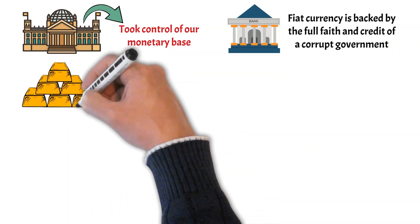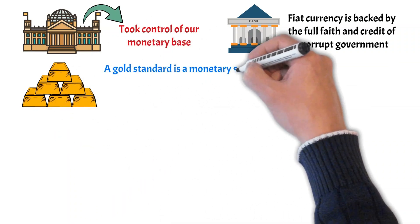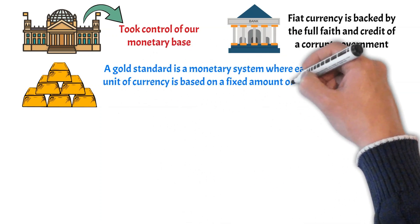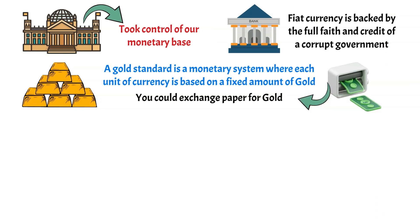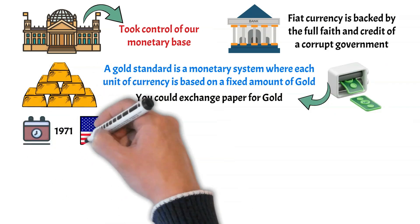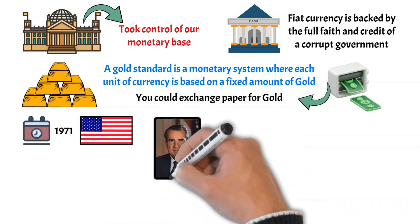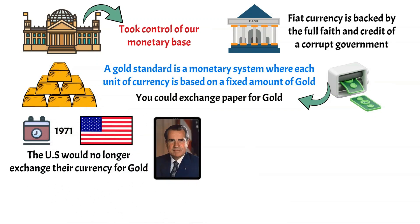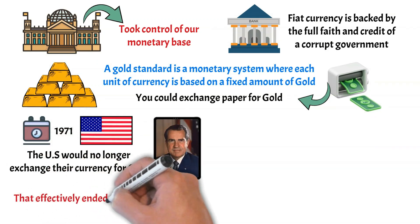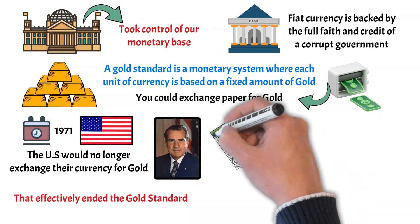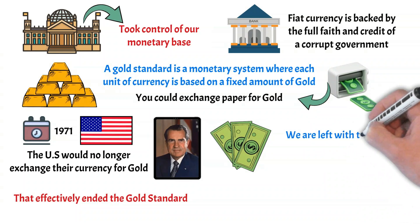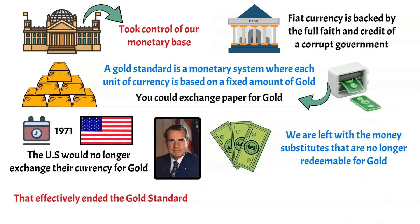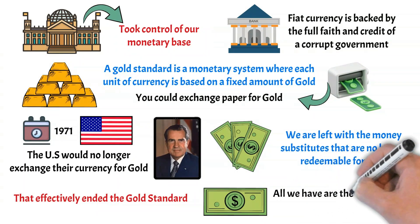For a while, fiat currencies were backed by gold — this was known as the gold standard, a monetary system where each unit of currency is based on a fixed amount of gold, so you could exchange paper for gold at a fixed price. Then, in 1971, US President Richard Nixon announced that the US would no longer exchange their currency for gold, effectively ending the gold standard. Other countries then followed suit, and now we are left with a fiat monetary system — money substitutes that are no longer redeemable for gold.